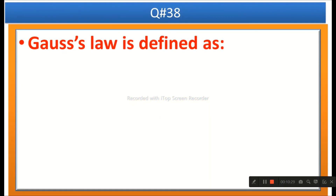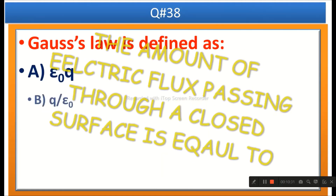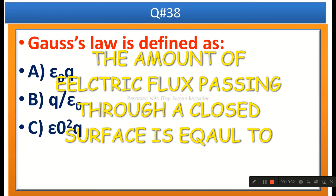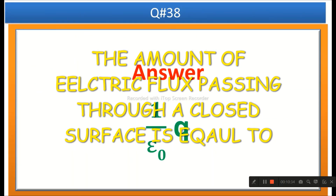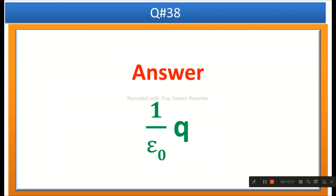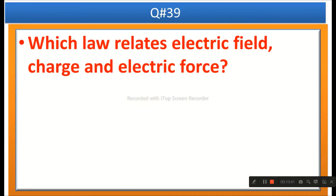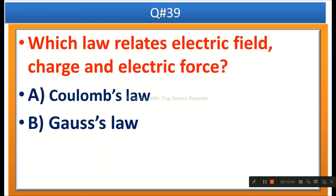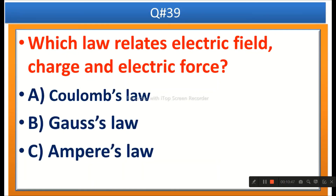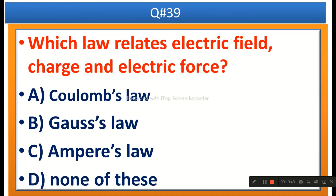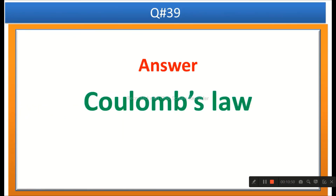The next question: Gauss's law is defined as — options given. The right answer is 1 over epsilon-nought times Q. The next question: Which law relates electric field, charge and electric force? Options are Coulomb's law, Gauss's law, Ampere's law, or none of these. The right answer is Coulomb's law.